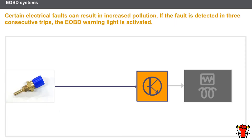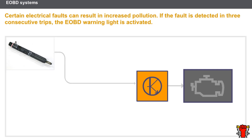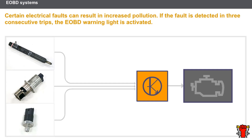The injection computer carries out a constant diagnosis of the electrical circuits of components linked to it. In case of an electrical fault, the injection computer switches on the injection warning lights. Certain electrical faults may result in increased pollution. These faults concern the following components in particular: the injectors, the EGR solenoid valve, and the fuel pressure sensor. If the fault is detected in three consecutive trips, the EOBD warning light is activated.